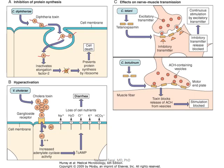Two different forms of clostridia cause opposite effects: one causes spastic contraction by blocking inhibitory neurotransmitters, and another causes flaccid paralysis by blocking acetylcholine receptors. Same genus, different strains, producing two opposite actions. Make sure you understand the difference between spastic paralysis and flaccid paralysis — the mechanisms are different, but the net effect is the same, because for respiration you need both contraction and relaxation.